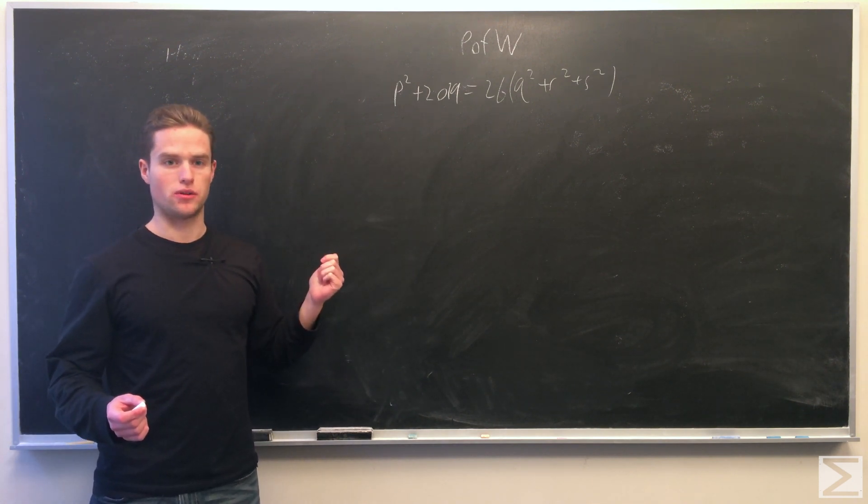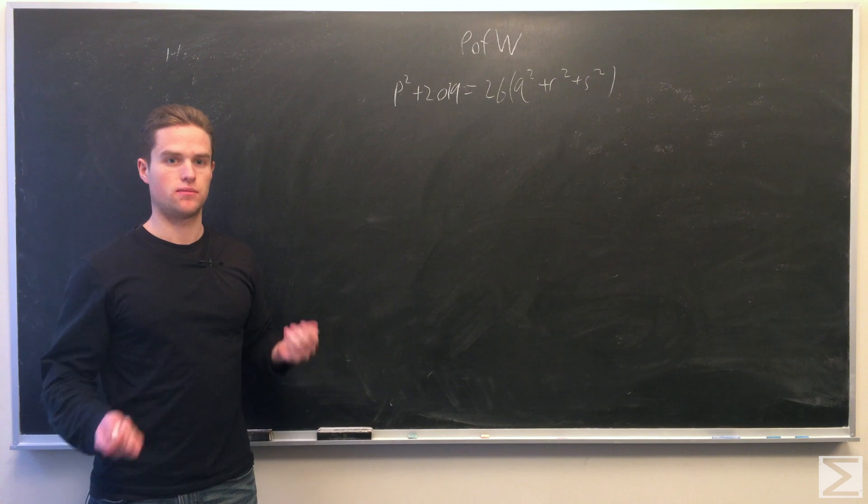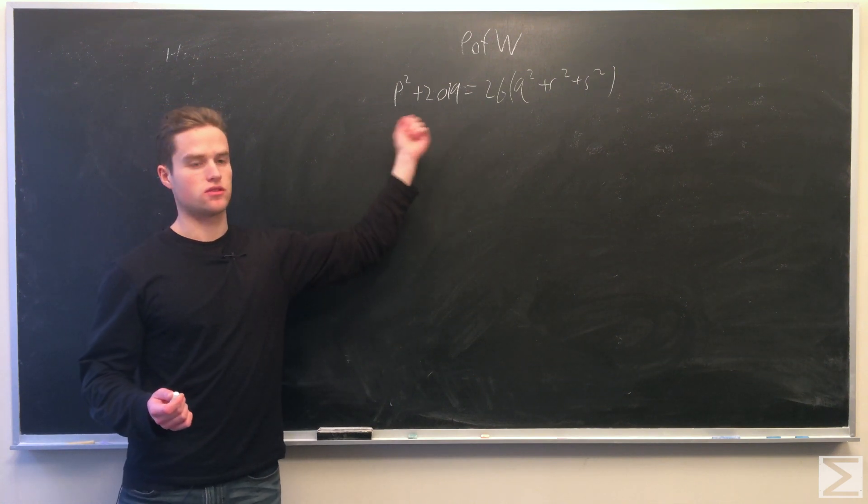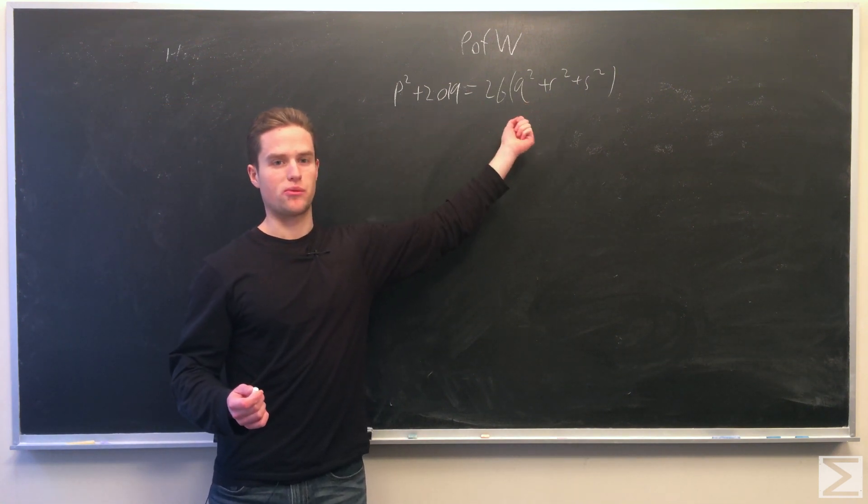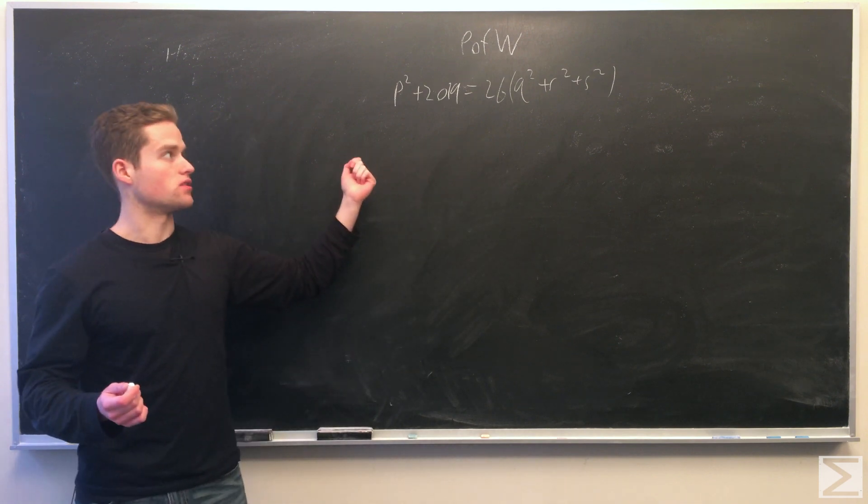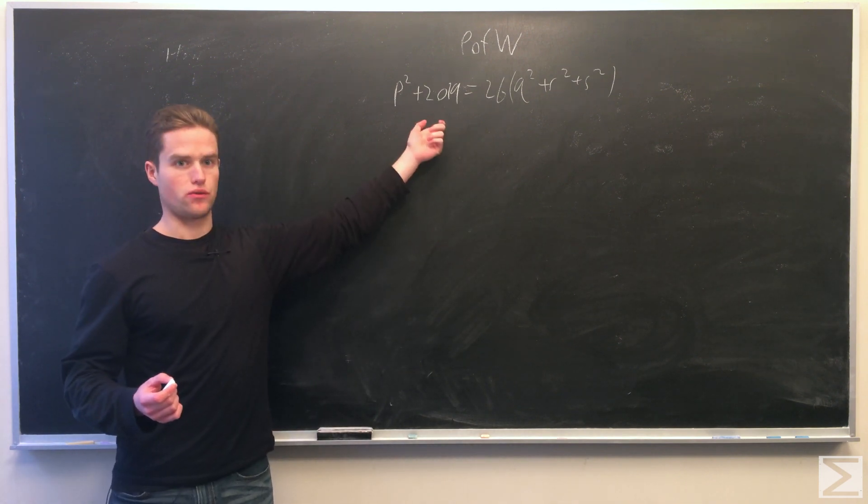To do this we're going to take modulo three different numbers and see that these integers have to be some permutation of these numbers. First we're going to take this thing modulo four.